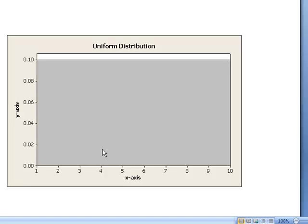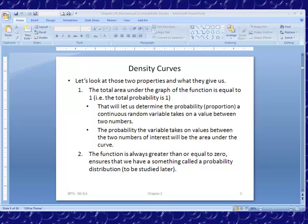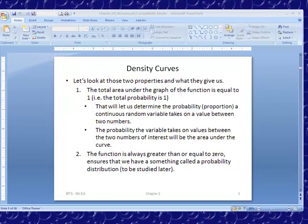We need the fact that the area underneath that complete curve has to equal 1 in order to say that it is a probability density function. The total area under the graph equals 1, the total probability is 1. That will let us determine the probabilities or proportions of a continuous random variable, and we can find the probabilities between two values.